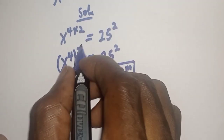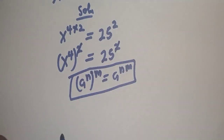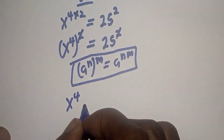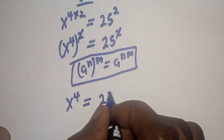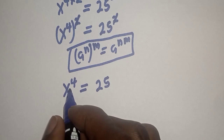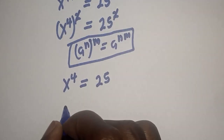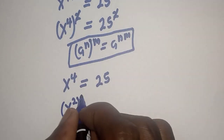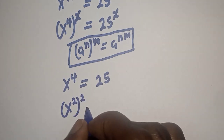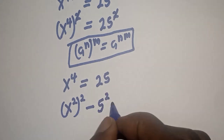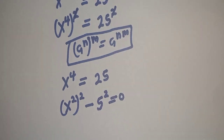Now, this square can cancel this. We have S raised to power 4 is equal to 25. Now, S raised to power 4 can also be written as S squared, squared, minus 5 squared, which comes to this side, making it equal to 0.